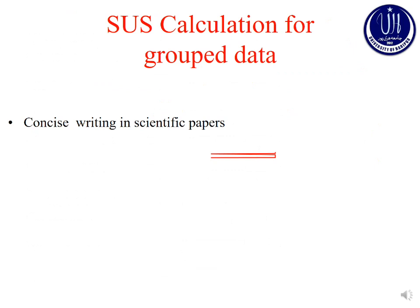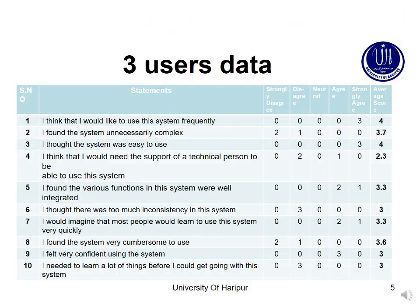Now we have to calculate from group data. Usually in scientific papers we have too many users — 20 or 30 — and we have to collect their data in one single table. So if we have more than 10 or more than 2 users, how do we calculate the SUS score? Do we need to show each individual user in one table?